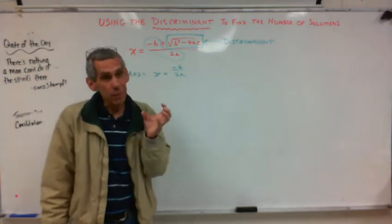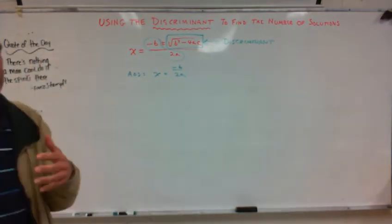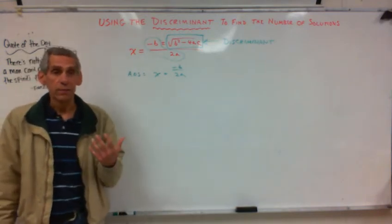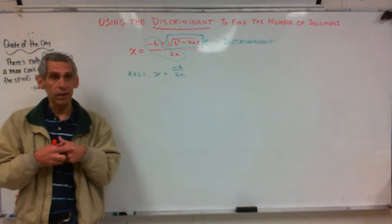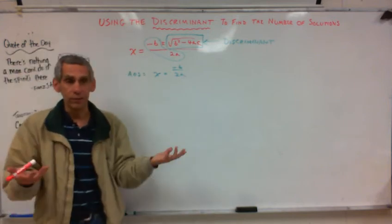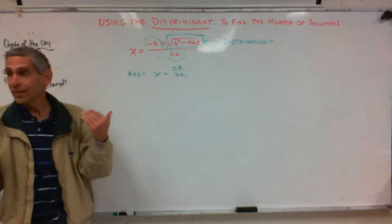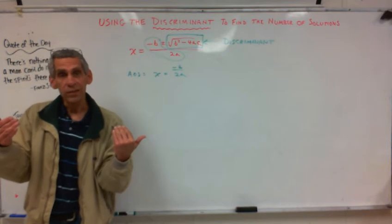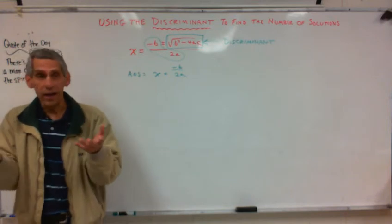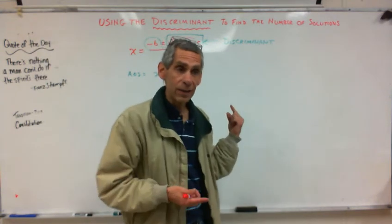The discriminant actually tells you quite a bit. Sometimes people will ask — like most of the problems I've given you so far — to solve a quadratic equation, meaning find where it crosses the x-axis, find x equals something. You get two places where x is on the x-axis. Well, sometimes the question is not to solve it, but just to say: how many solutions are there? They're not saying find the x-intercepts. They're just saying how many solutions are there. The discriminant is the thing that tells you that.